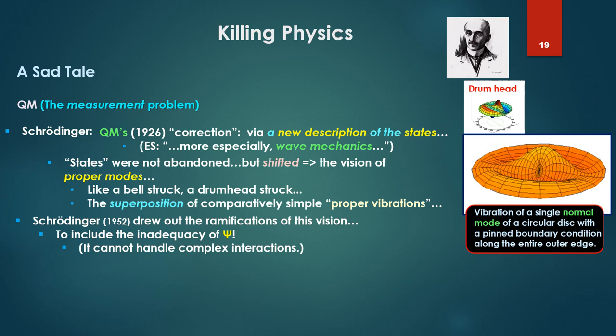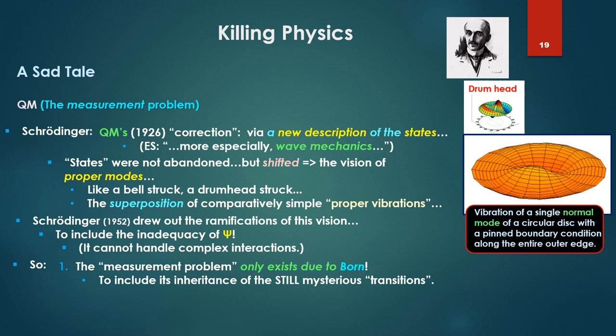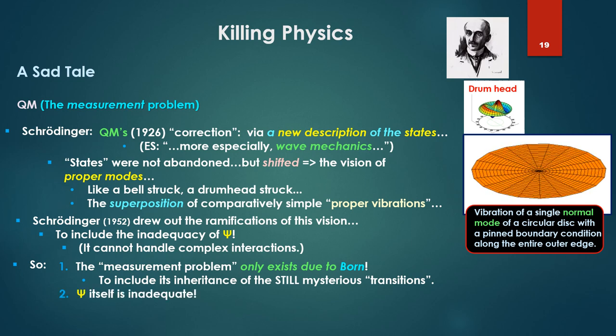So Schrodinger drew about the ramifications this vision to include the inadequacy of psi. That one should sink in. Because psi cannot handle complex interactions. It's linear. So one, the measurement problem only exists through the inheritance of the still mysterious transitions. Gotta let that sink in. Two, psi itself is inadequate by Schrodinger's own discussion. Where does Schrodinger's critique go? Why is it ignored? Isn't this at the heart of the measurement problem? To sum: physics' problems start way before the measurement problem.